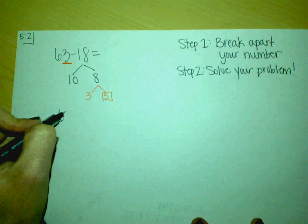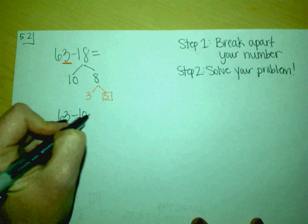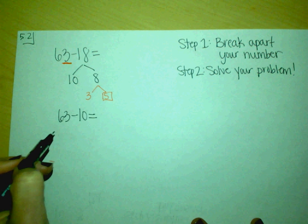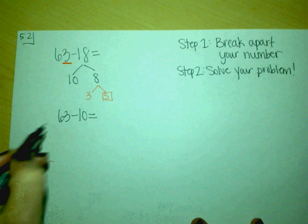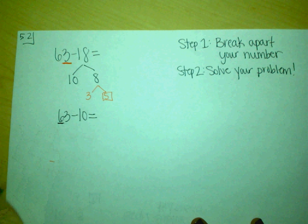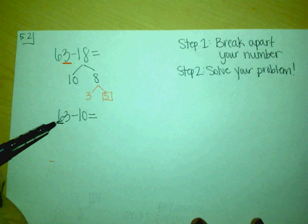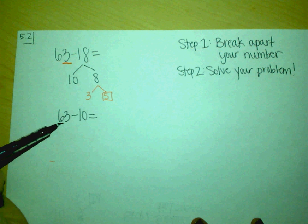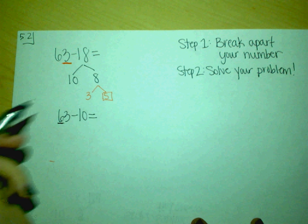So we do 63 minus 10, and they can either use their number line to do this or they can think in their head what is ten less than 63. And I told them that it's just one less than the ten they already have. So 63 minus 10 is 53.